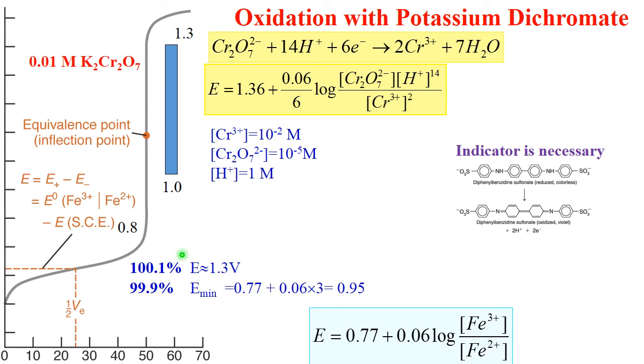In this case, you cannot rely on color of chromate ion. It's very pale yellow, so you need an indicator.